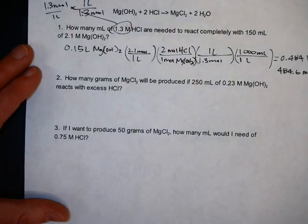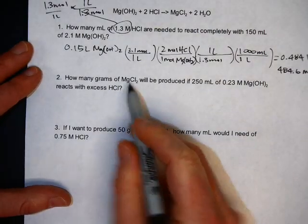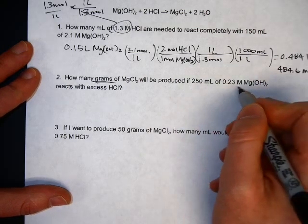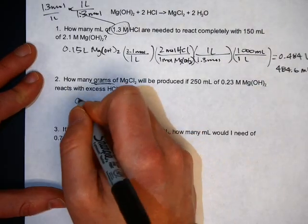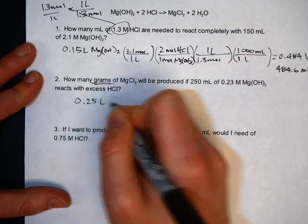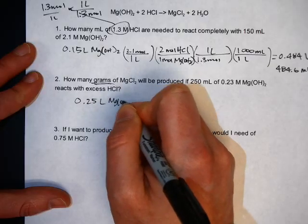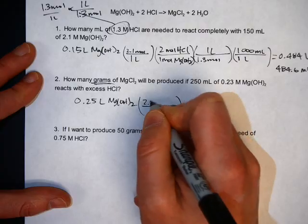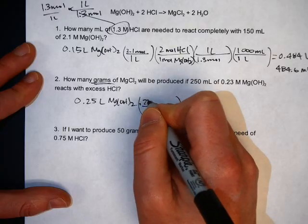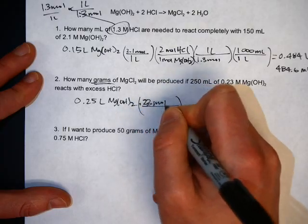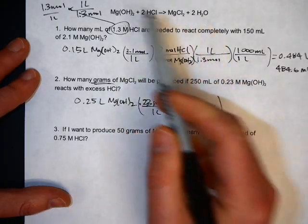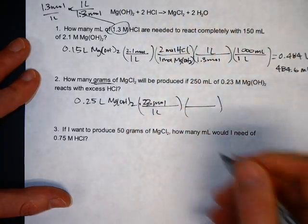The second kind of problem, we'll start the same way, but you're going to end at grams, because it says how many grams. Start the same way. 250 milliliters of the 0.23 molar. So that's 0.25 liters of Mg(OH)2. It's 0.23 molar. That means 0.23 moles in one liter. And mole ratio, we're going from Mg(OH) to MgCl2. It's a one-to-one ratio.